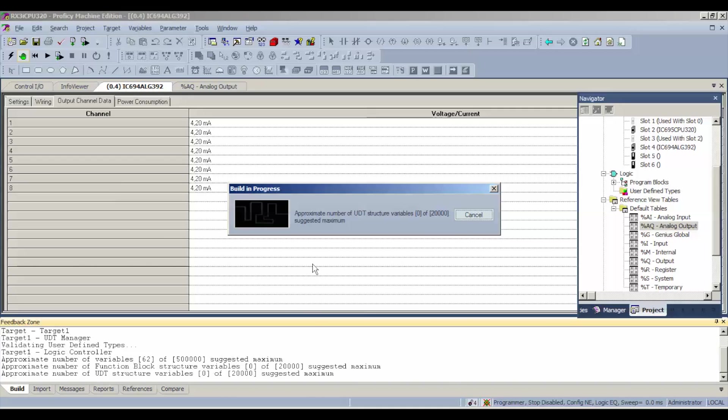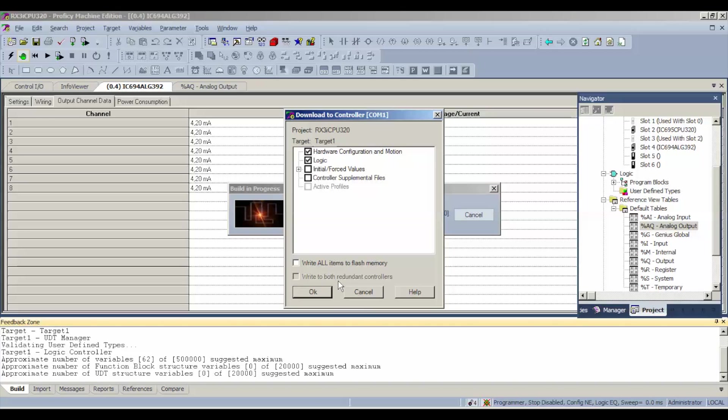Once that's cleared, we'll download. When it asks us what we want to download to it, we want to only do hardware configuration motion and logic, nothing else. We're not writing anything to the permanent flash memory. Again, this is just a test on the card to make sure it's working, so hardware configuration logic, OK.